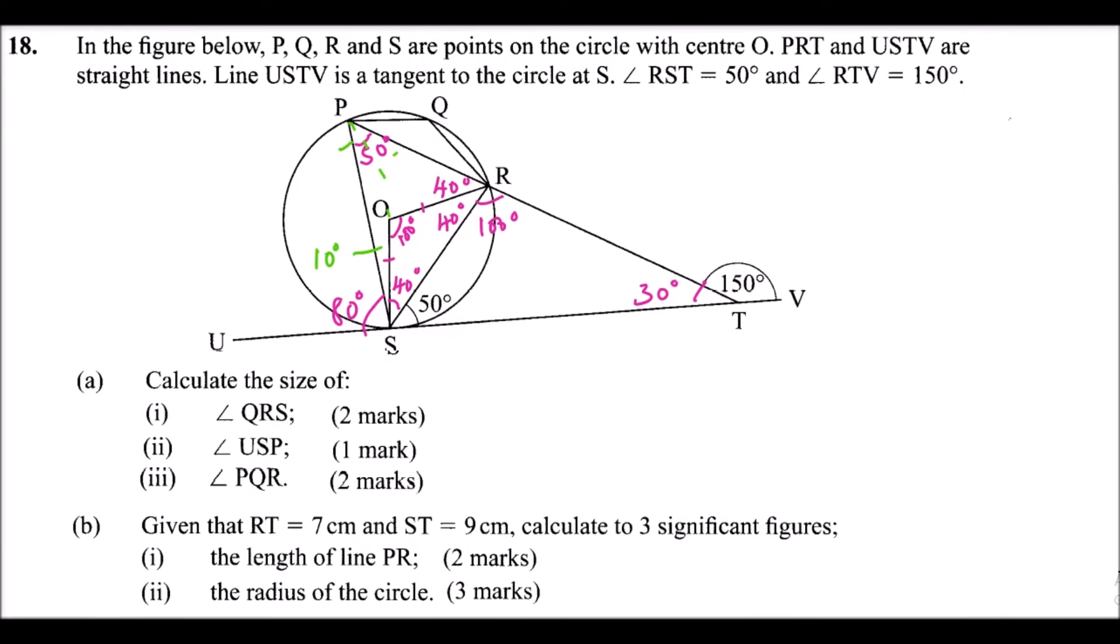is a cyclic quadrilateral. And opposite angles add up to 180. So since this angle here is 40 and 10, that is 50 minus 180, it means that angle here is 130.